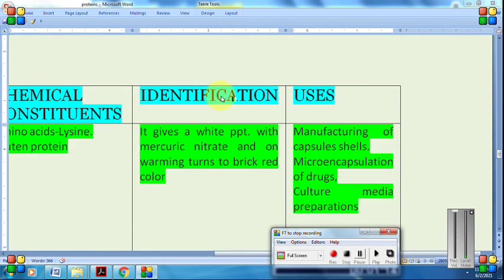For identification, there are different identification tests - you can remember one test. It's very simple: gelatin gives a white precipitate when treated with mercuric nitrate, and upon warming it turns to brick red color. So remember this test: white precipitate with mercuric nitrate, and on heating it changes to brick red color. Another example: it evolves ammonia when treated with soda lime, so with soda lime it evolves ammonia when heated.